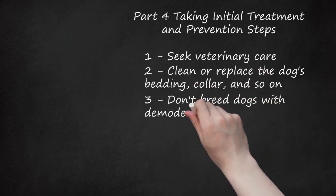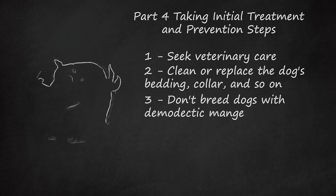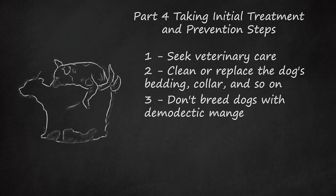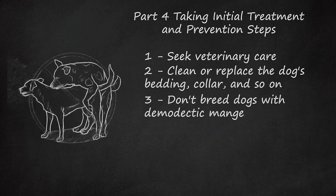Don't breed dogs with demodectic mange. Dogs who get bad cases of demodectic mange sometimes have a weakness in their immune system that they've inherited from their parents. Because of this, owners of dogs that have had long, severe, or difficult-to-treat cases of demodectic mange are usually encouraged not to breed their dogs. For dogs that have had minor, localized cases of demodectic mange, breeding is sometimes considered acceptable, especially if the mange occurred when the dog was young and cleared up on its own. However, some veterinarians will recommend against breeding dogs that have had any sort of demodectic mange.